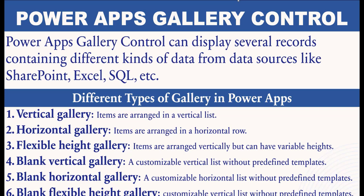For example, if you want to show product details in a gallery control — product name, product category, product color, product price — all these things you can display. Another important key feature is scrolling; this gallery control supports vertical and horizontal scrolling to browse through items.